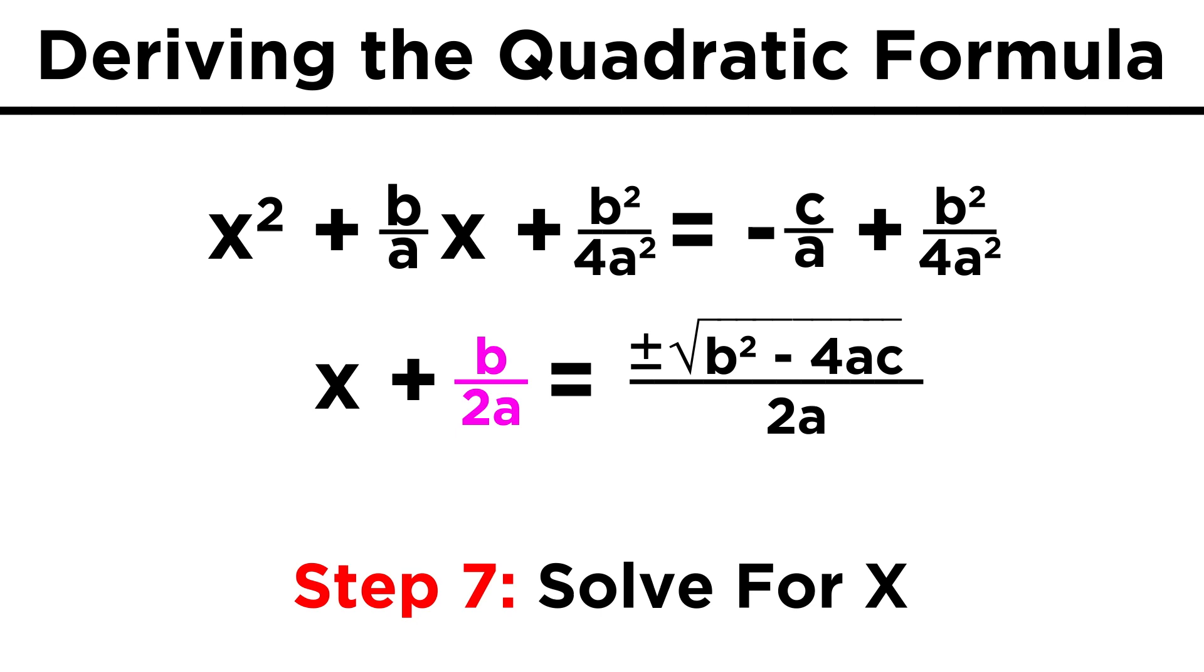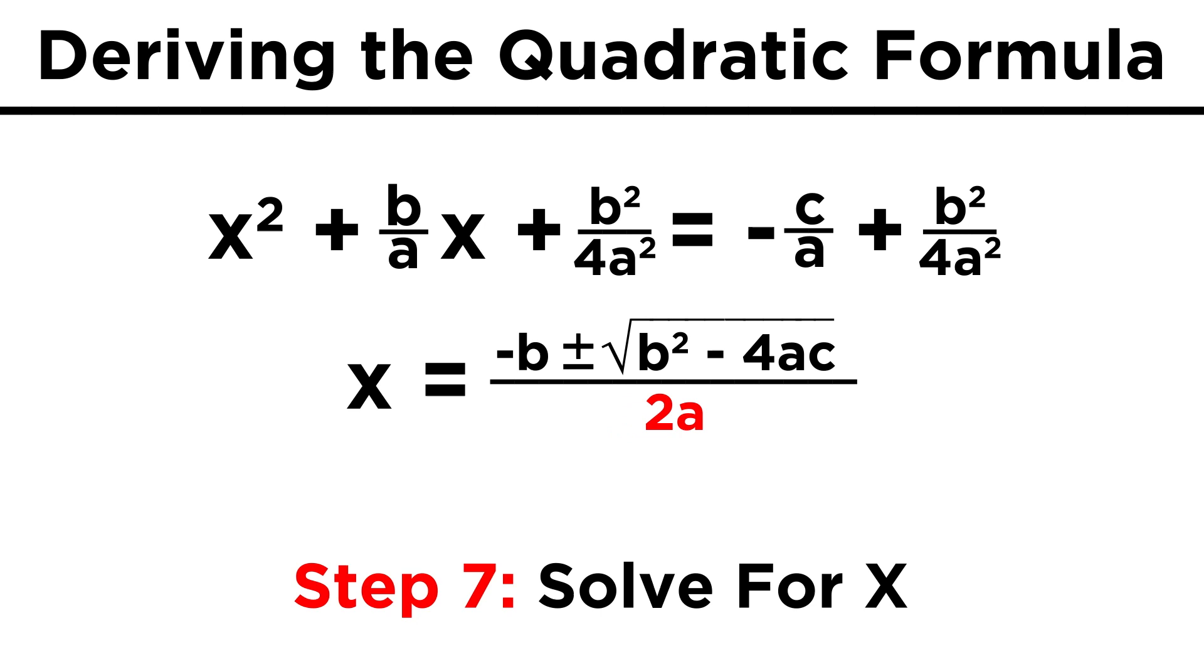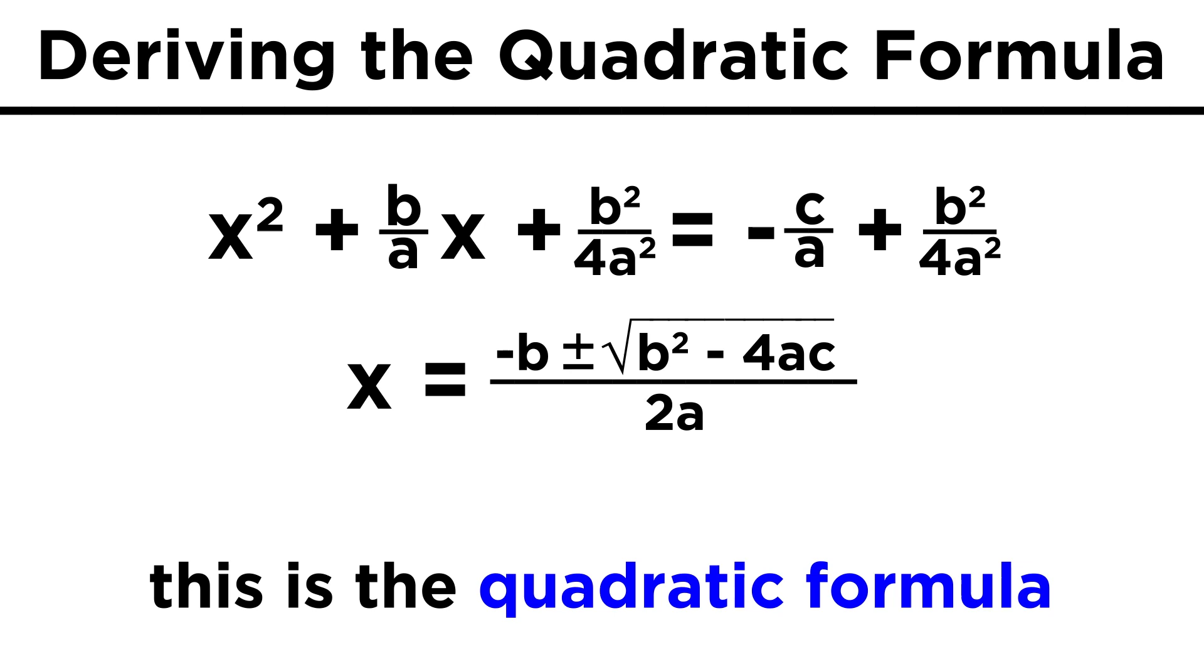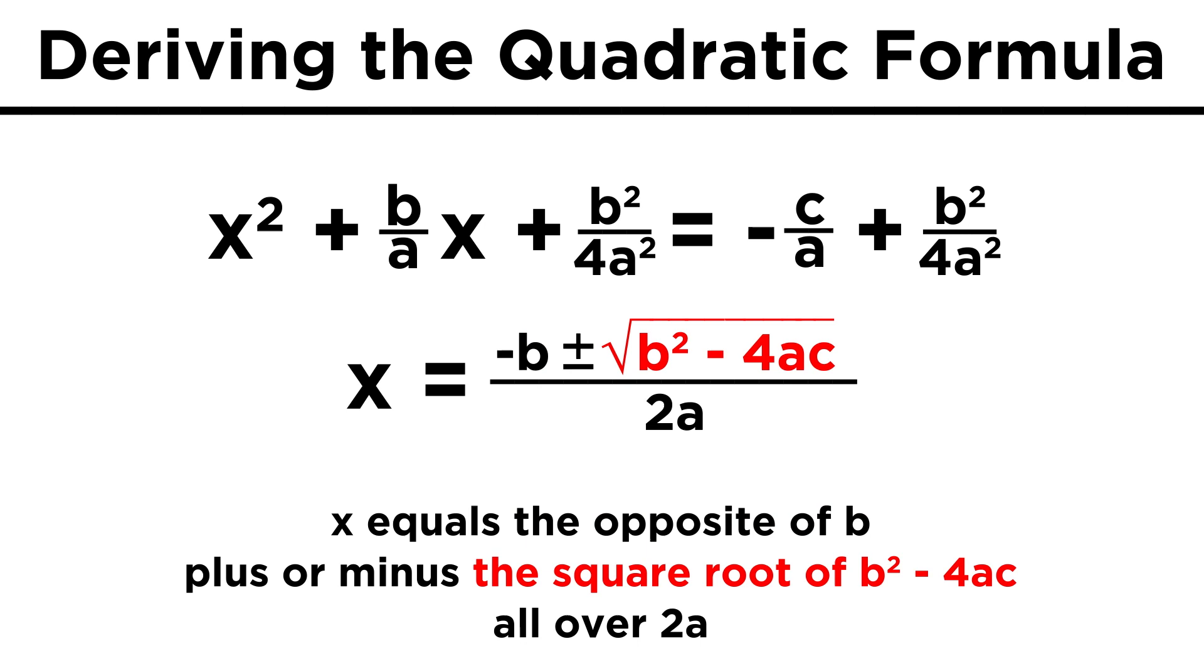Now we just subtract this term on the left from both sides to get x alone, recognize that these have the same denominator, so we combine them, and there we have it, the famous quadratic formula. Even though you just learned how to derive this, it is still a good idea to memorize it, so repeat after me.